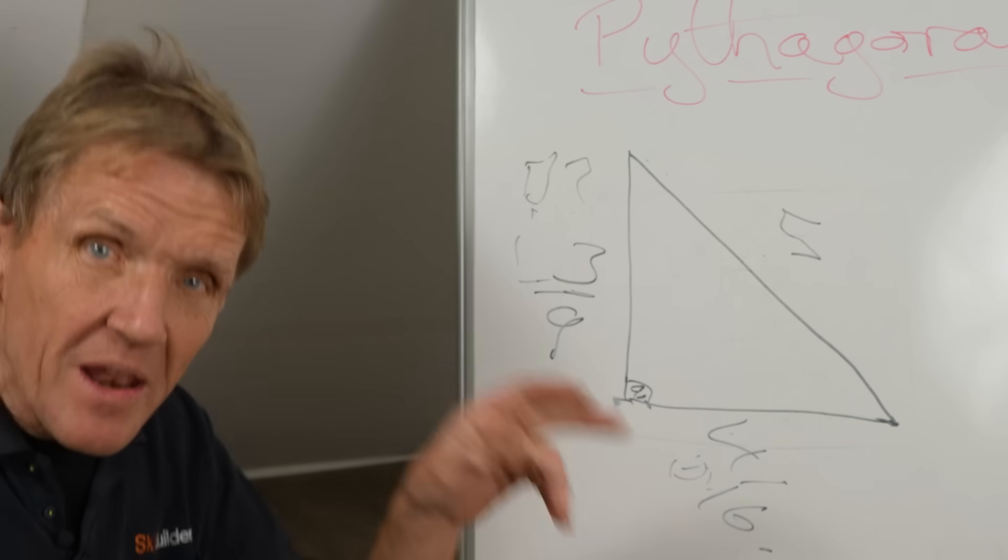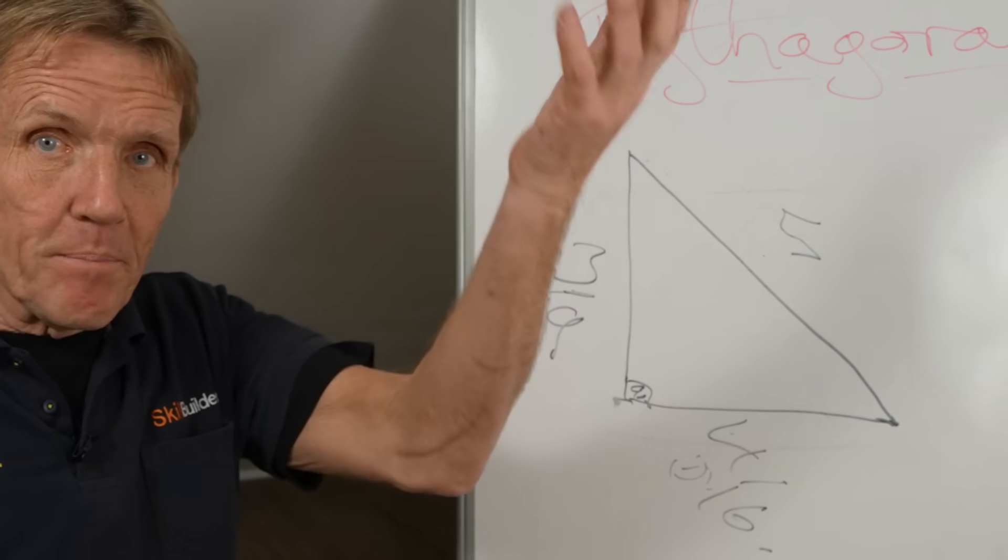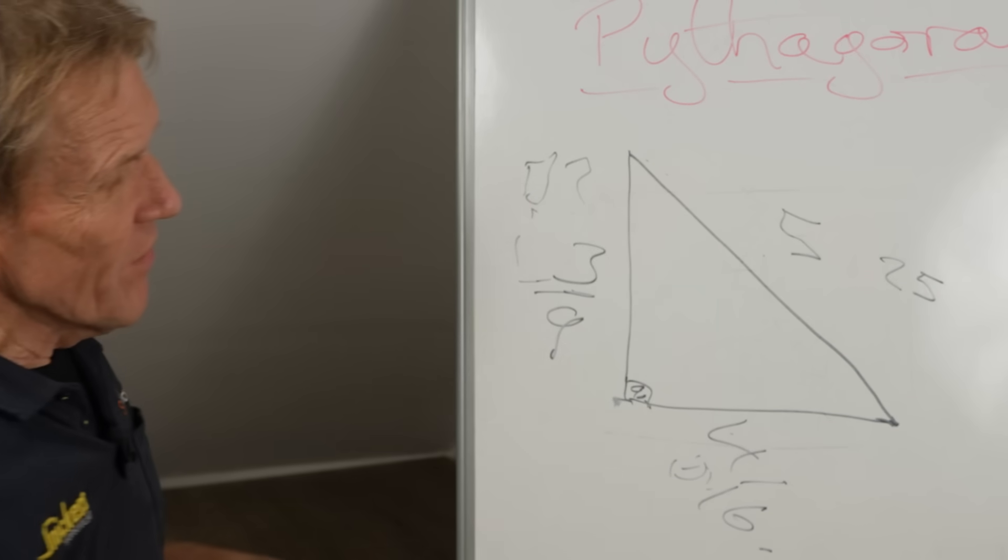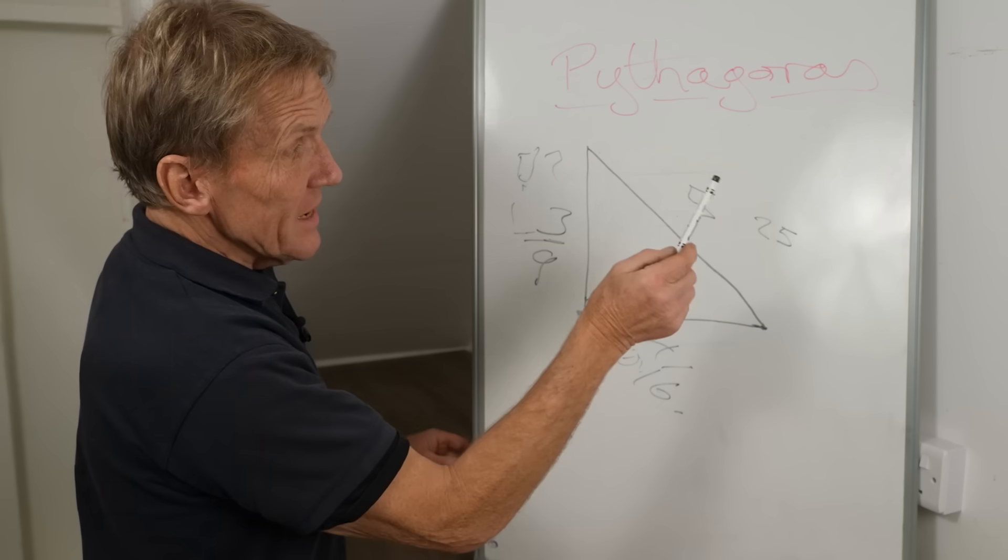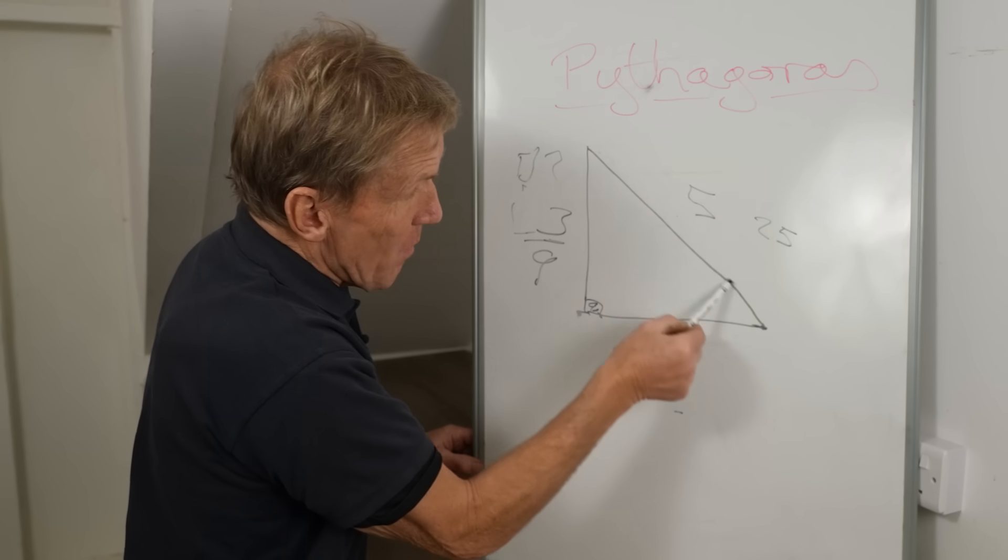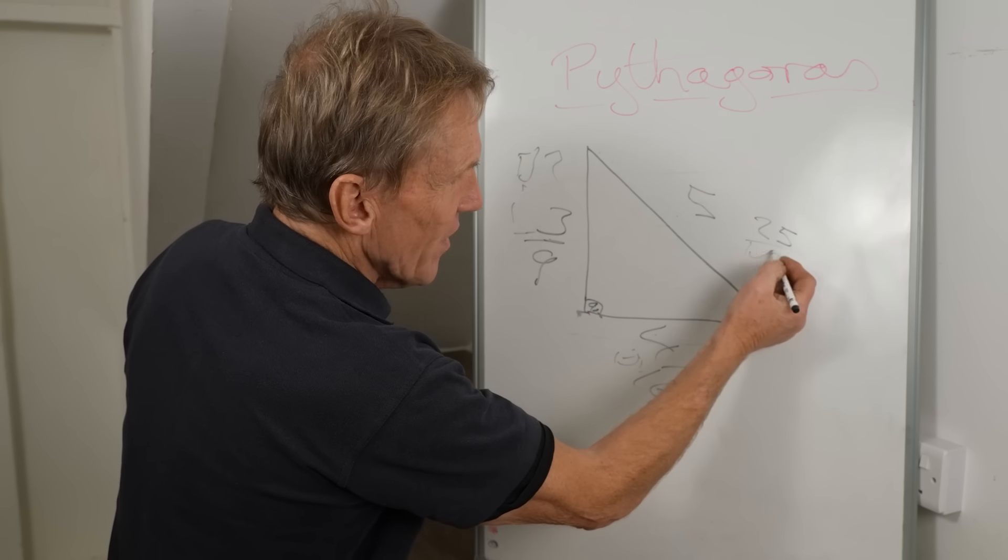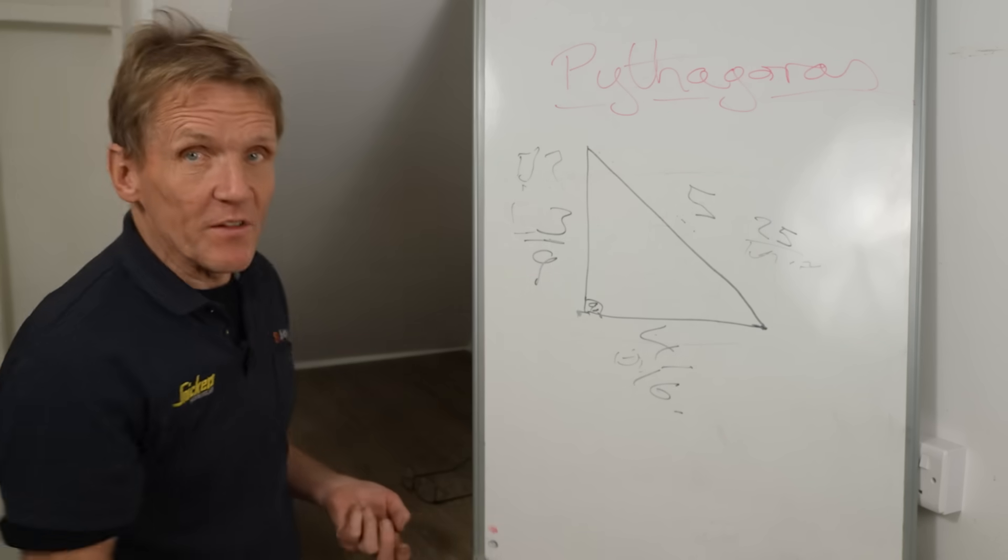So what we're saying is 9 plus 16, which is the sum of those two squares, equals 25. So we take the 25, and we know that the sum of these two squares is equal to the square of that one there. And 25, of course, when you look at the square root of 25—five times five is 25—so we know that's five. So it proves the theorem works.